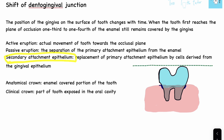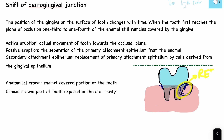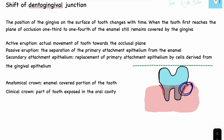After passive eruption has moved the primary attachment epithelium down to the cementum and the gingiva has receded too much, the secondary attachment epithelium forms. The primary attachment epithelium was similar to the reduced enamel epithelium, but now it changes structure — gingival cells replace it. So the secondary attachment epithelium is derived from the replacement of the primary attachment epithelium by cells derived from the gingival epithelium.